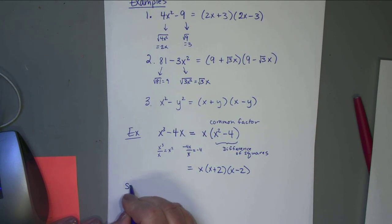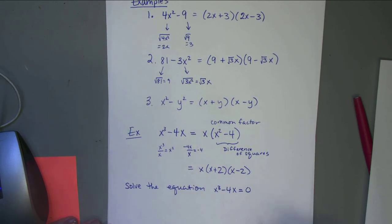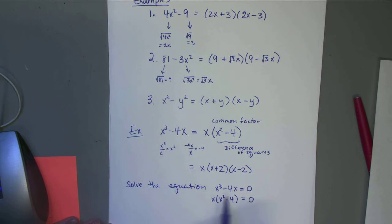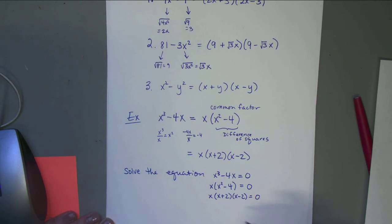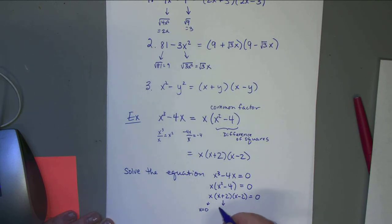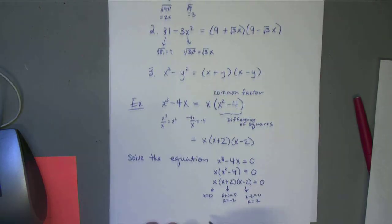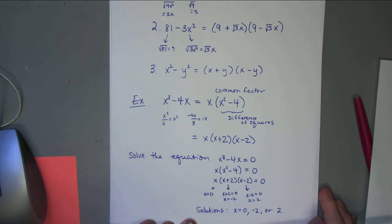If you were solving x³ - 4x = 0, you would first factor out an x, then continue factoring to get x(x+2)(x-2) = 0. Using the zero property: if x = 0, the whole expression is zero. If x+2 = 0, then x = -2. If x-2 = 0, then x = 2. So the solutions are x = 0, -2, or 2. You could check by plugging them in.